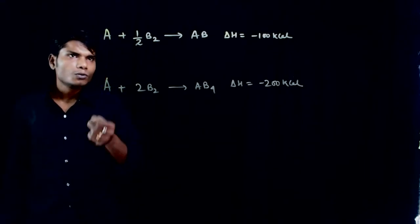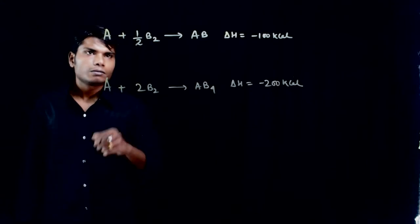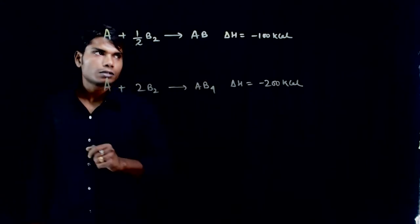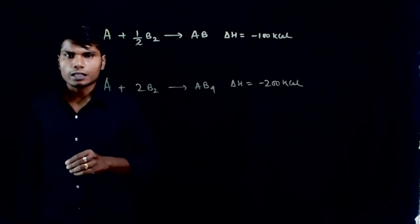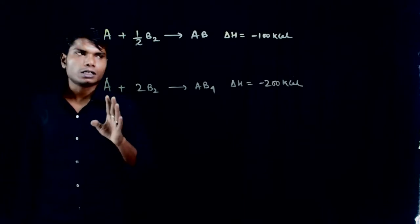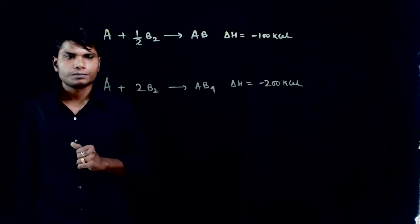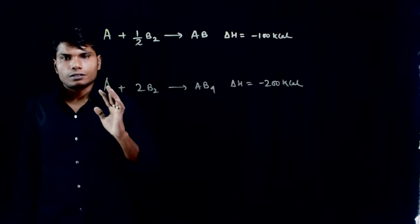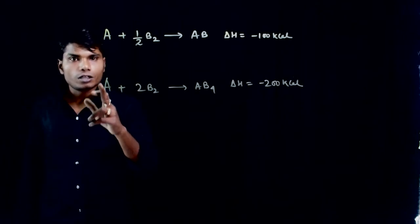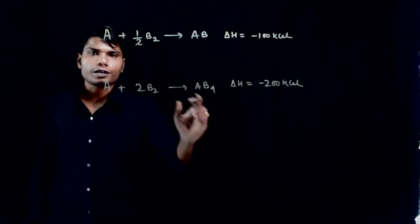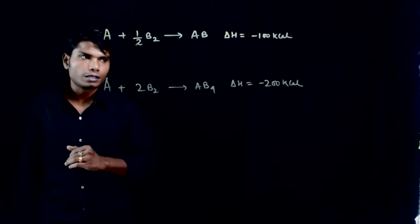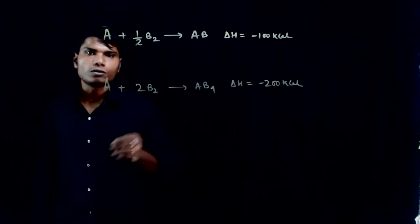So for every one mole of A reacting via this process, 100 kilocalorie is liberated and delta H equals minus 100. If one mole of A reacts through this reaction, 200 kilocalorie evolves.